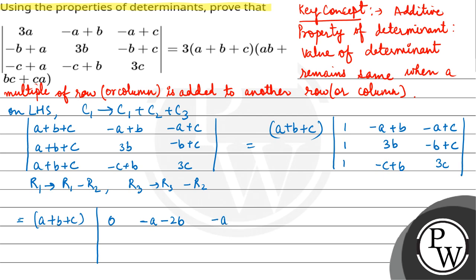This would be minus A plus B. R2 as it is. And R3: 1 minus 1 is 0, then minus C plus B minus 3B would be minus C minus 2B. And 3C minus, minus plus B, minus C would be 2C plus B.